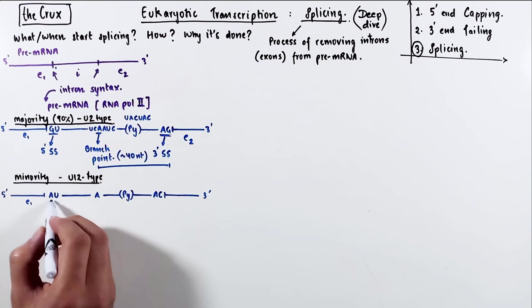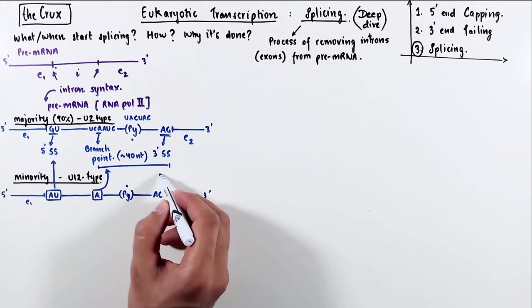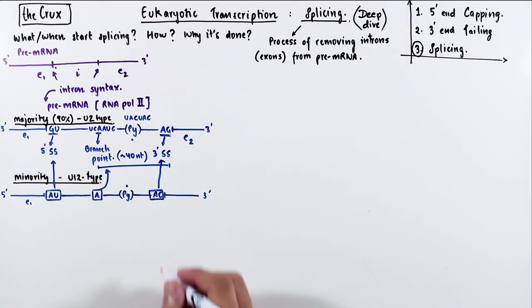So now we see that even in the pre-mRNA, you can have different types of introns, which means that their syntax is very different. Since we're on this subject of introns,